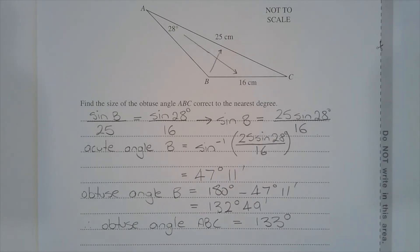To obtain obtuse angle ABC, we subtract 47 degrees and 11 minutes from 180 degrees. So obtuse angle B is equal to 180 degrees minus 47 degrees and 11 minutes, and that equals 132 degrees and 49 minutes, which rounds to 133 degrees correct to the nearest degree.